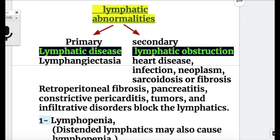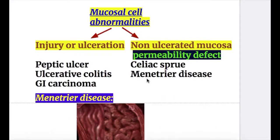Protein-losing enteropathy due to lymphatic abnormalities may be primary or secondary, congenital or acquired. Primary lymphatic disease includes lymphangiectasia. Lymphangiectasia is due to a defect in the lymphatics.